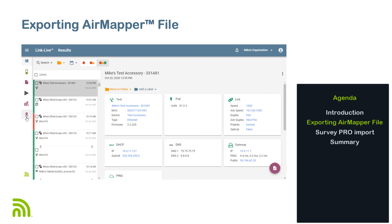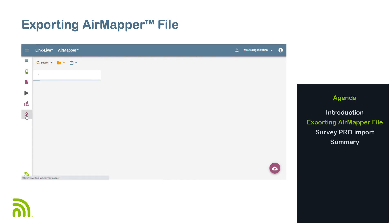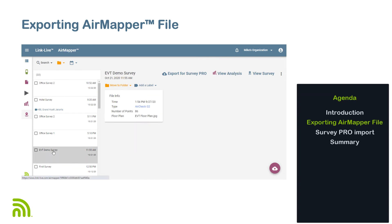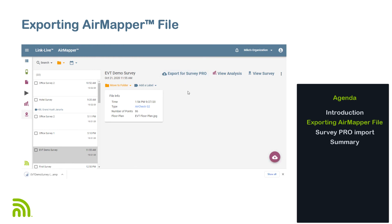First, log into LinkLive and go to the AirMapper section. From here, click on the desired site survey. In the upper right corner of the screen, you will see three options: Export to Survey Pro, View Analysis, and View Survey. Clicking on Export to Survey Pro will create a .AMP file and download it to your computer. This file is typically placed in your Downloads directory.